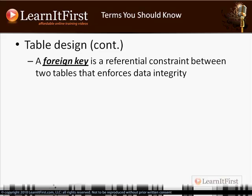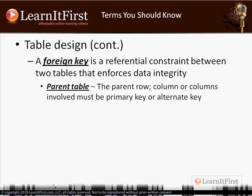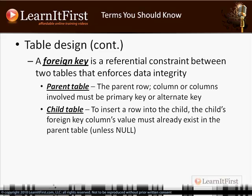Let's talk about the foreign key. The foreign key is a referential constraint between two tables — you don't have three-table or five-table foreign keys, it's just two tables. It enforces data integrity. You've got a parent table and a child table. The idea of the foreign key is that you cannot insert rows at the child that would be orphans — records with no parents. The bottom line: no orphaned child records. That's what referential integrity means — there are no children who do not have parents.